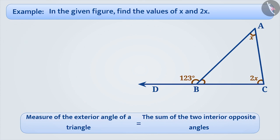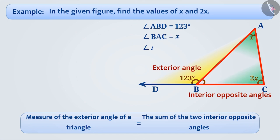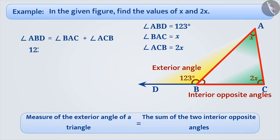Yes, we can definitely solve this question using the exterior angle property. Here we can see that angle ABD is the exterior angle of triangle ABC measuring 123 degrees. The interior opposite angles to this angle are angle BAC and angle ACB. The measure of angle BAC is x and the measure of angle ACB is 2x. From the exterior angle property of a triangle, we can write angle ABD is equal to angle BAC plus angle ACB, which means 123 degrees is equal to 3x.